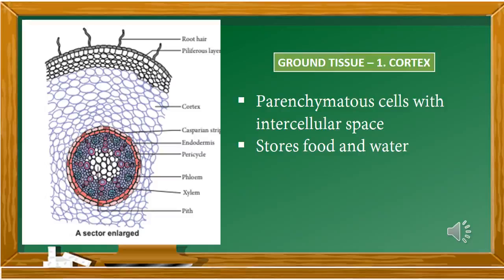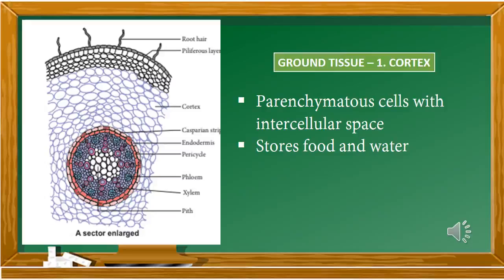The second tissue is ground tissue, which has four different types of layers: first cortex, second endodermis, third pericycle, and fourth pith. The cortex is made up of parenchyma cells with intercellular space, and it stores food and water. In the diagram you can see a vast area occupied by the cortical region, which is made up of parenchyma cells.